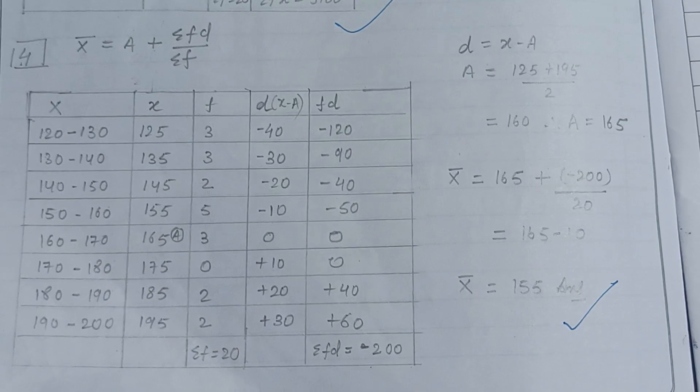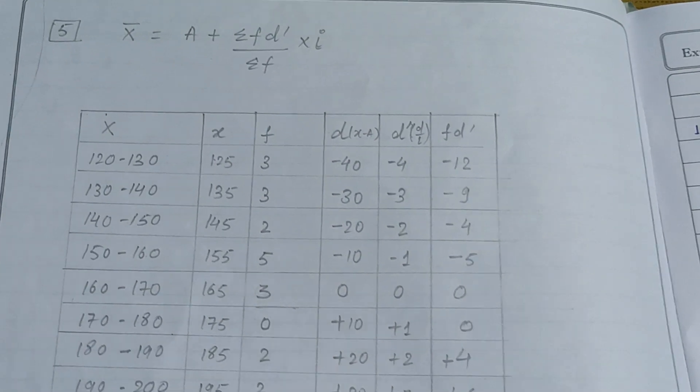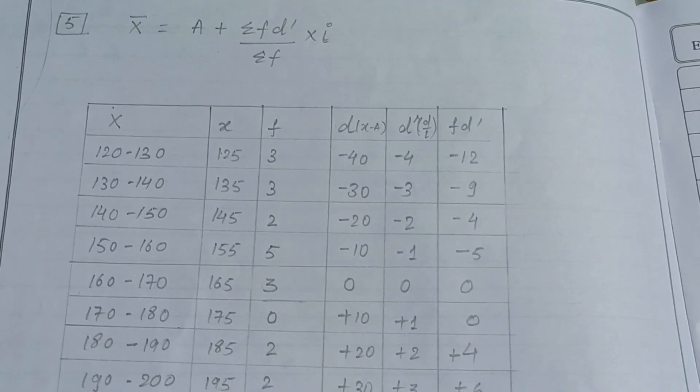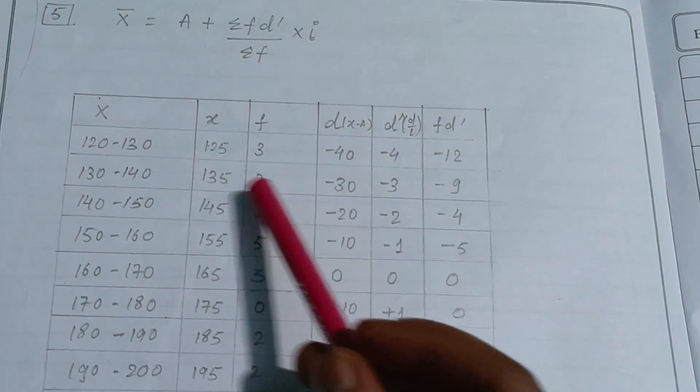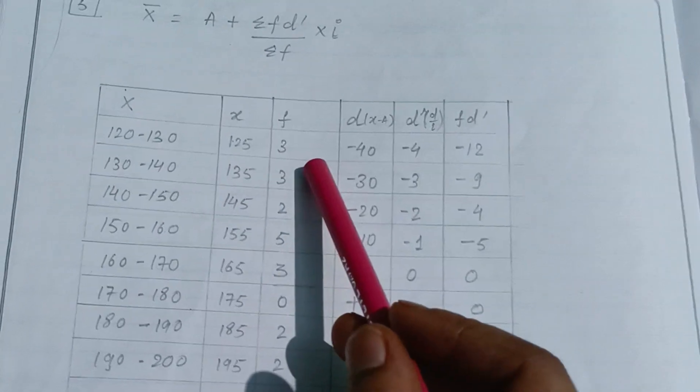The last formula is A plus Sigma F D dash divided by Sigma F times I, where D equals deviation and it can be calculated by subtracting X minus A.